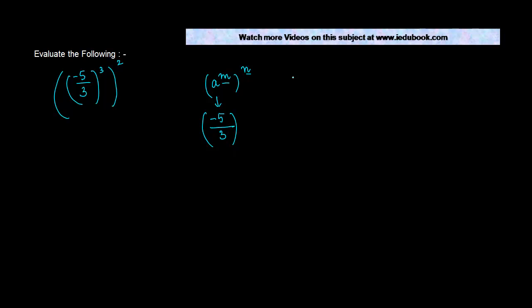And what do we know? We know that a to the power m, raised to the power n, is equal to a to the power m times n. Now my a is minus 5 upon 3, raised to the power m. m is how much? 3. Times n. n is how much? 2.